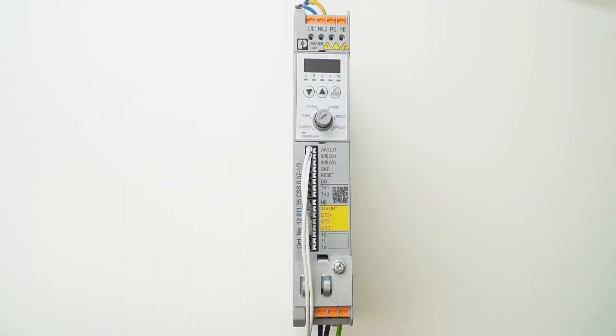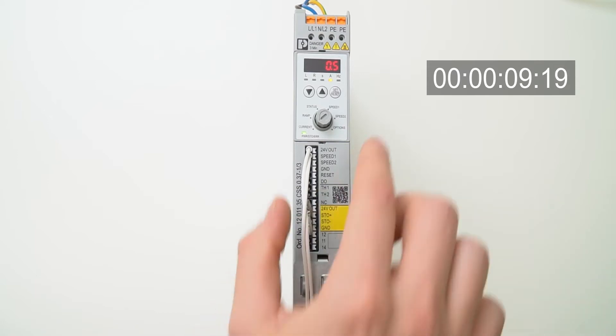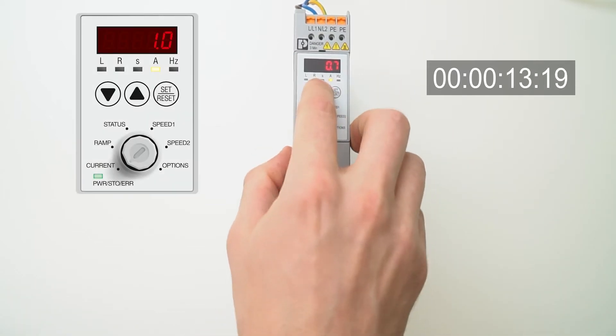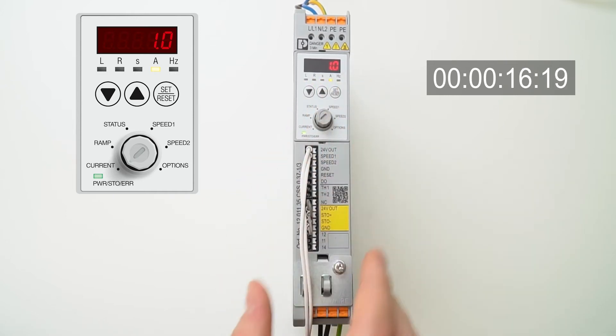After connecting the device we can turn the power on. The first thing that we need to do is to set the nominal current of the motor. In order to do so we can check the nominal current of the motor on the nameplate, turn the rotary switch to current, change the value with up and down button, and press set reset to store the value.